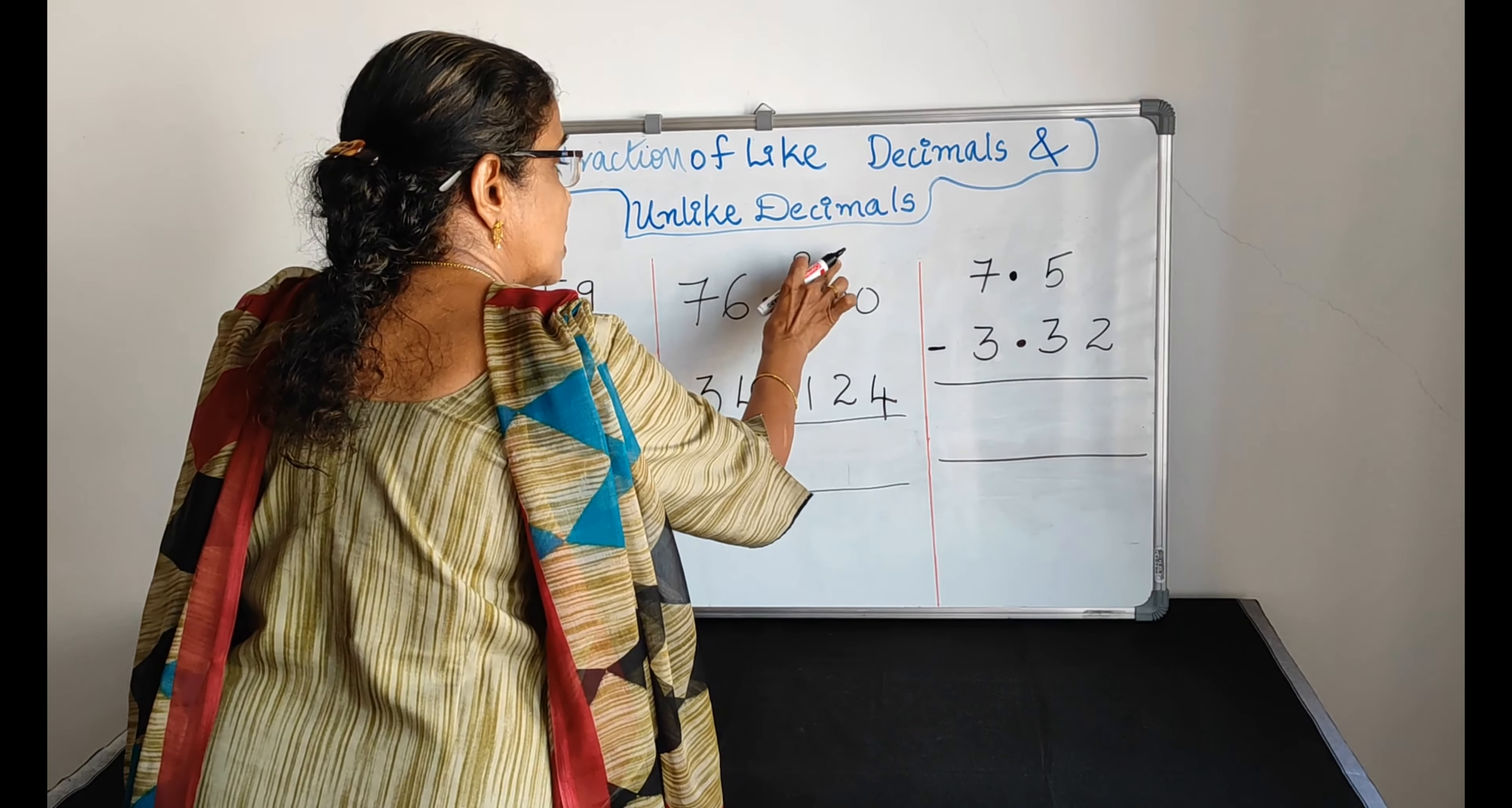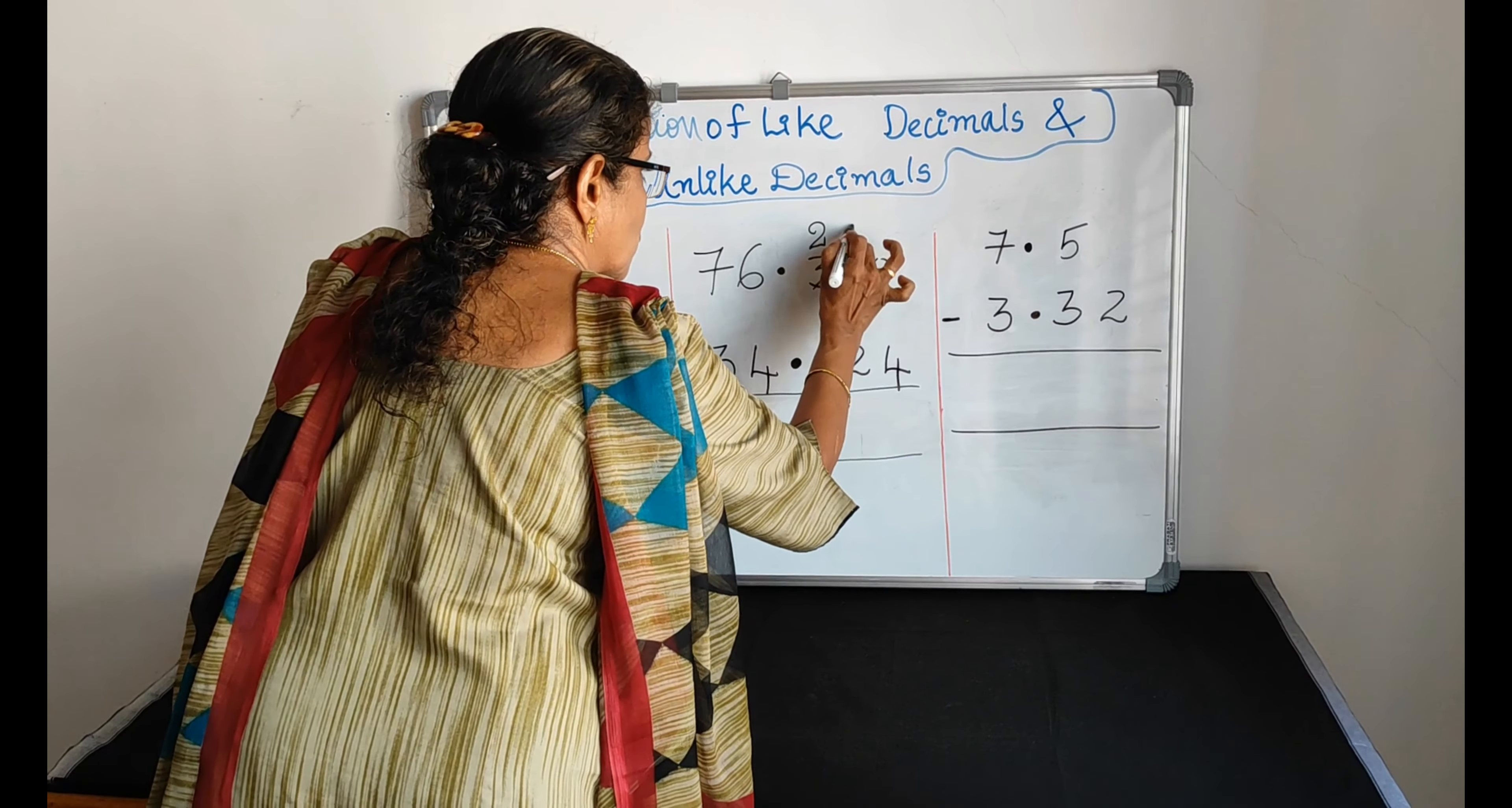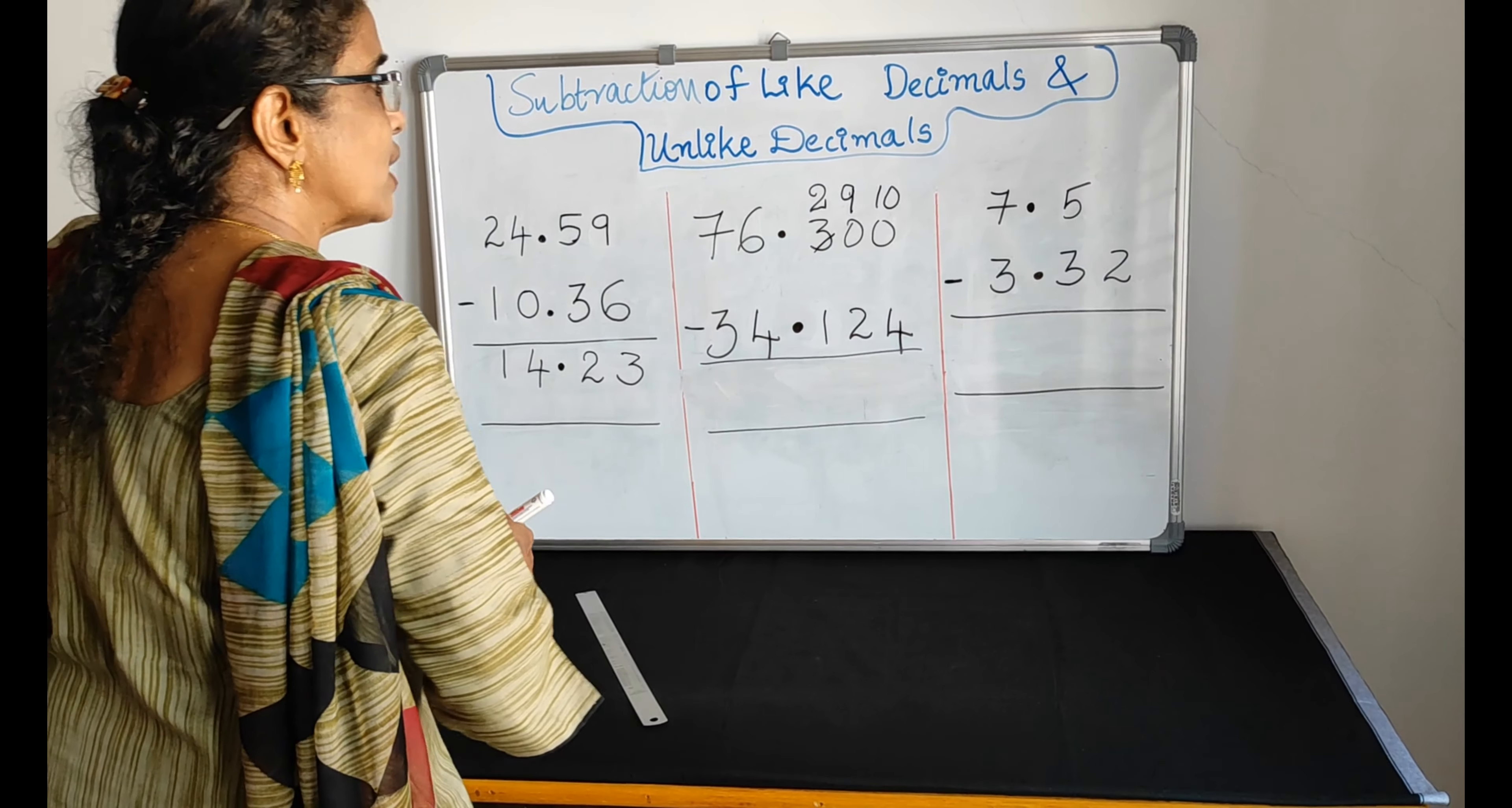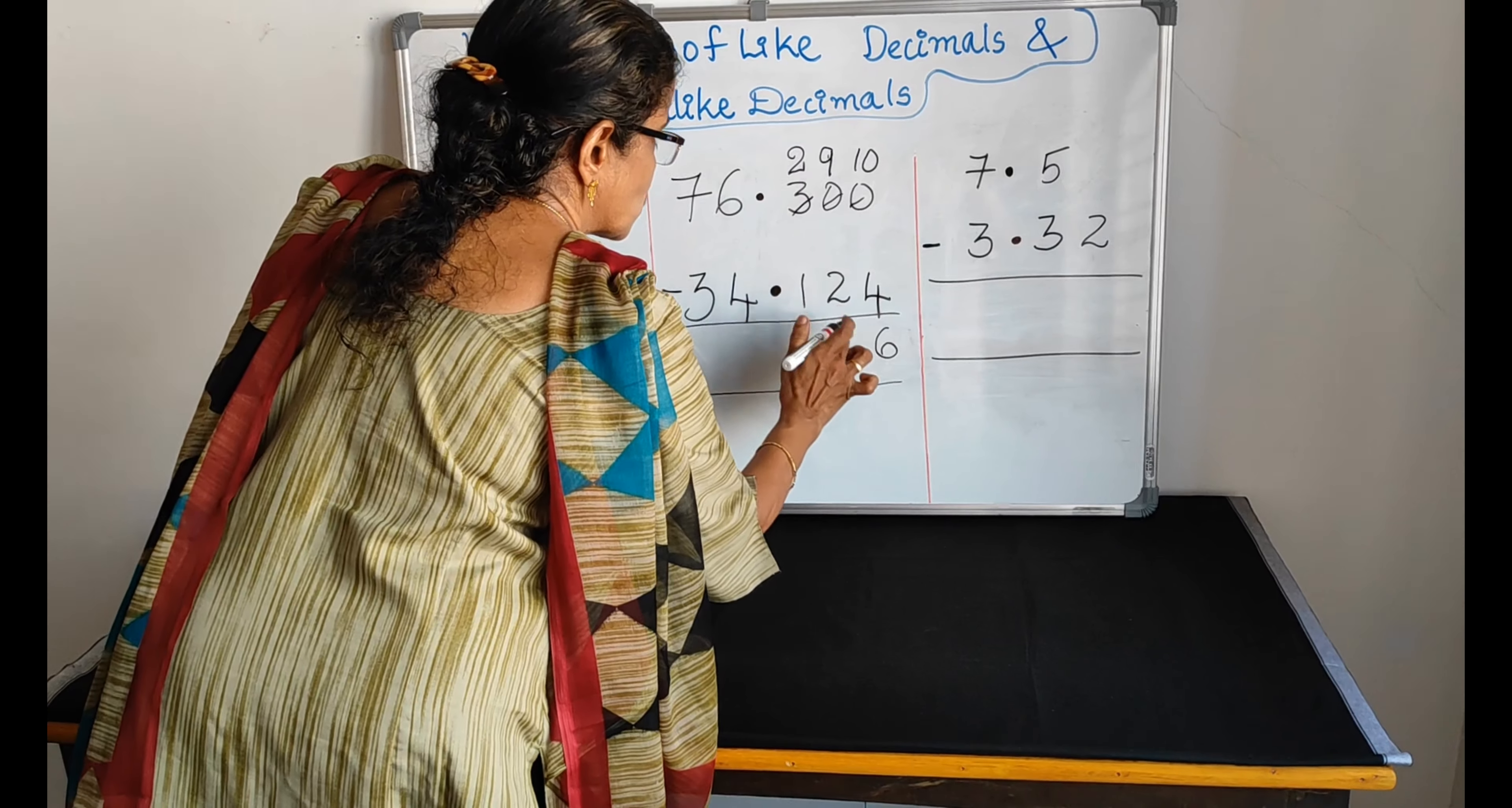Now 0 minus 4. So follow the rule of regrouping or rearrangement. So we are taking 1 from the 3. So 3 changes to 2. That 1, when it comes here, it becomes 10.